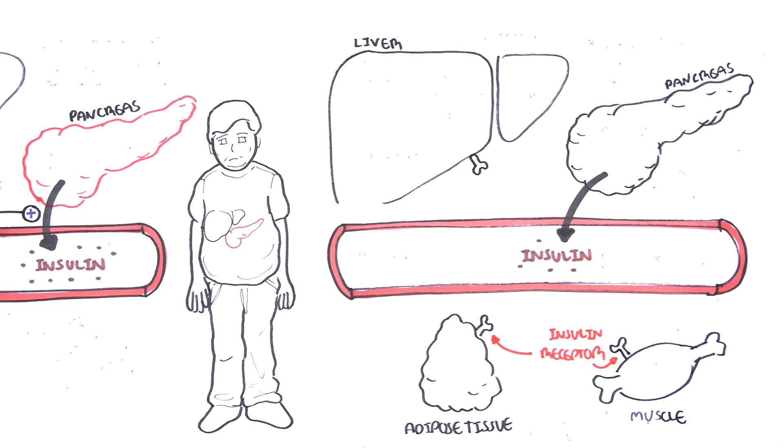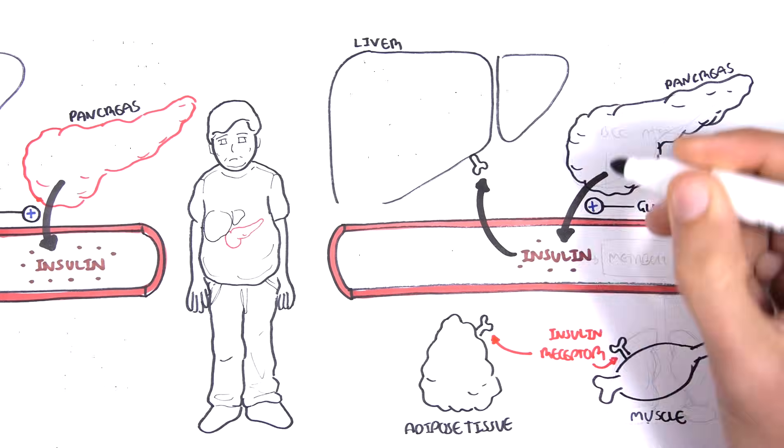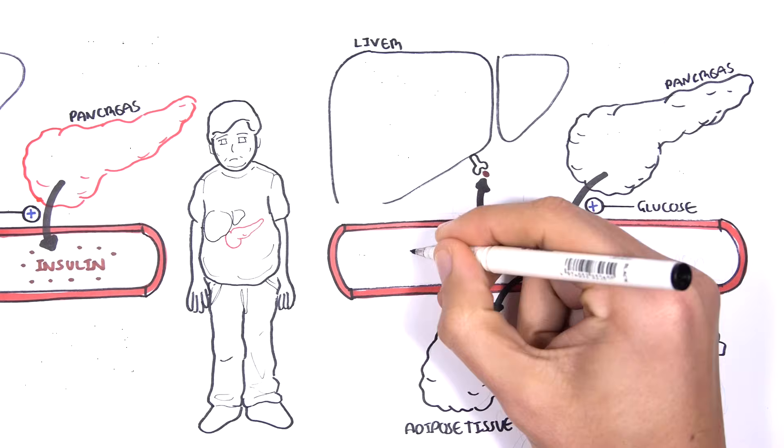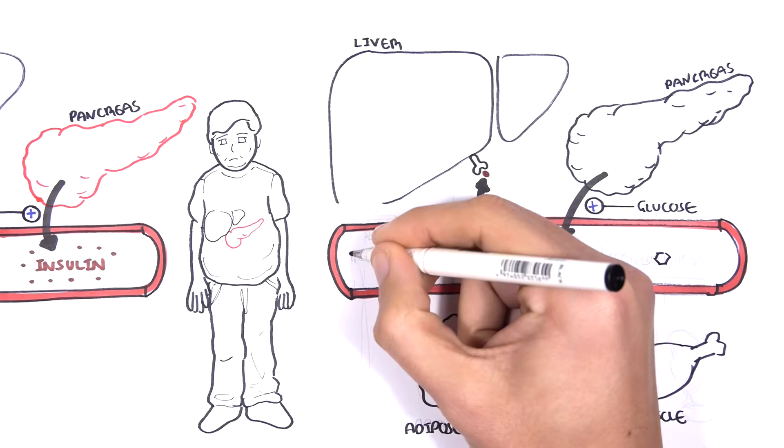So again high blood glucose will stimulate insulin production and insulin release from the pancreas. The insulin will then target these organs by binding onto insulin receptors or insulin-sensitive proteins with the sole purpose of decreasing blood glucose levels.